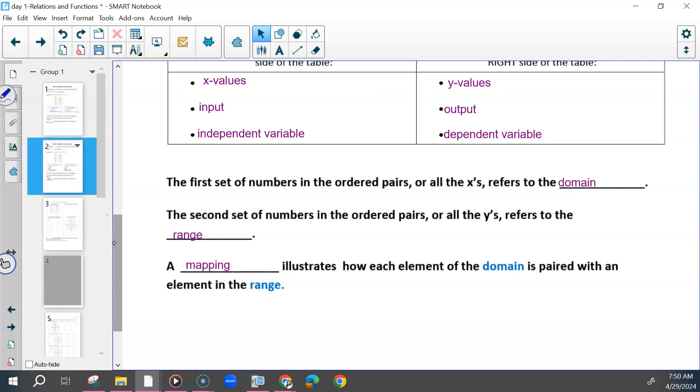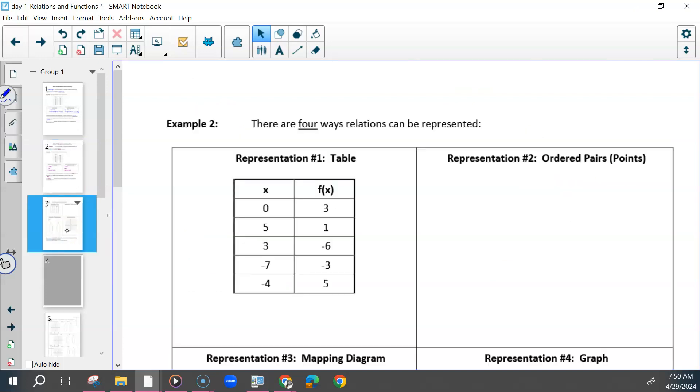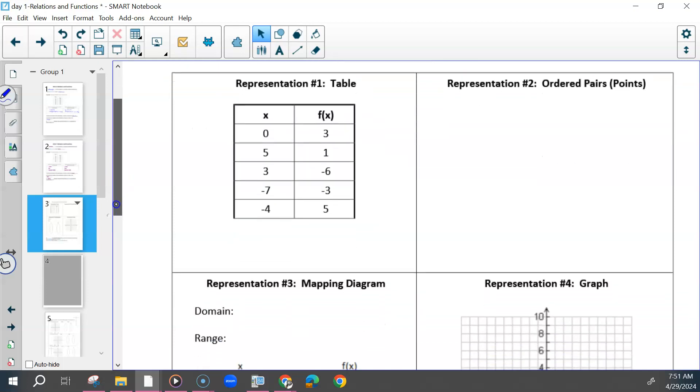So we've seen mappings throughout the year, really in our short sites. But now we're actually going to figure out how to write one, how to do more. So there are four different ways a relation can be represented. We've talked about one, the ordered pairs. A table is also one, a mapping is one, and then a graph. So we're going to take this table and use it to represent the other three ways.